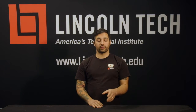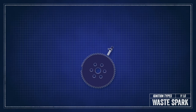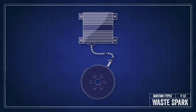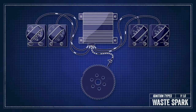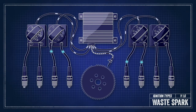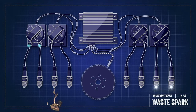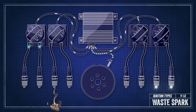The second system we're going to talk about is a distributorless waste spark setup. This is a big step forward in tuning. In this setup, there will be a combination of sensors on the camshaft and/or crankshaft that will tell the computer how fast the engine is spinning and where it is in the combustion cycle. The computer will fire a single coil per two cylinders, matching them so that they fire a wasted spark on the cylinder in the exhaust stroke and the main spark on the cylinder in the combustion stroke.